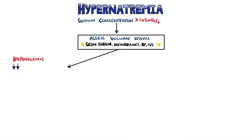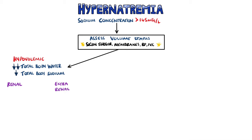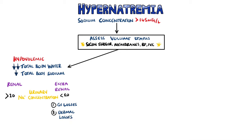If the patient is hypovolemic, it means the total body water has decreased more than the body sodium, resulting in a higher concentration of sodium in the blood. This can be divided into renal and extra-renal causes by looking at the urinary sodium concentration. If it is low, then we know the kidneys are functioning properly and are reabsorbing sodium, as we would expect in a hypovolemic patient with activation of the renin-angiotensin-aldosterone system. These include GI losses and dermal losses. Renal losses would have a higher urinary concentration of sodium, and causes include acute kidney injury, chronic kidney disease, and diuretics.